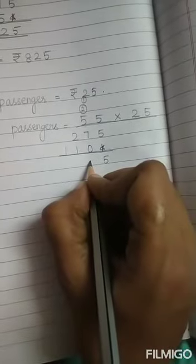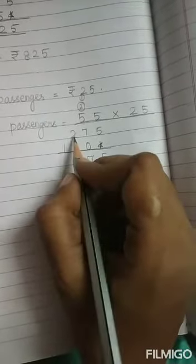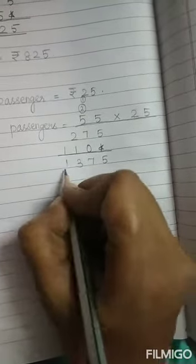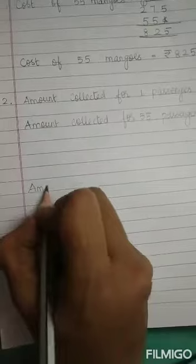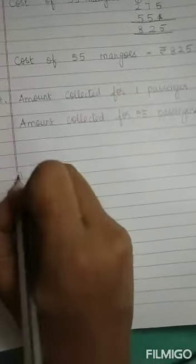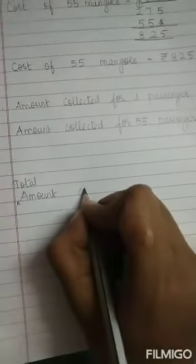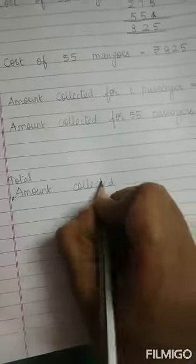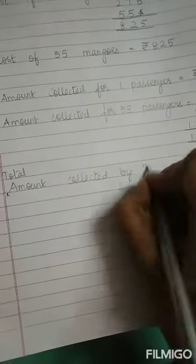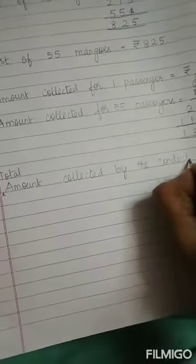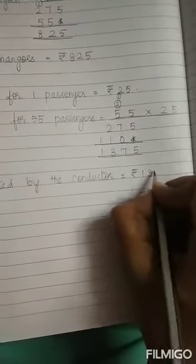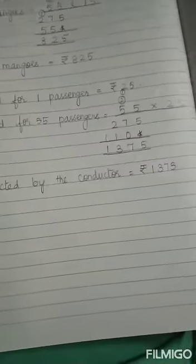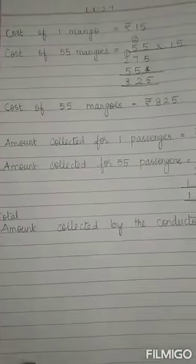Now you add up 5. 7 plus 0 is 7. 2 plus 1, 3. 1. What will be the amount collected by the conductor? Amount or total amount collected by the conductor is equal to rupees 1375. Have you all understood, children? How to write the statements and also the sum?